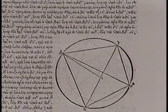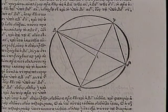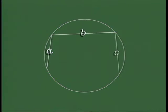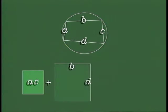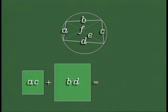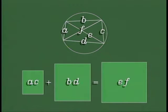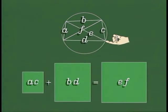Ptolemy himself proved the addition formula in another way, using a remarkable property of quadrilaterals that can be inscribed in a circle. A quadrilateral is a polygon with four sides. Not every quadrilateral can be inscribed in a circle, but for those that can, the product of the lengths of the two opposite sides plus the product of the lengths of the other two opposite sides is equal to the product of the lengths of the two diagonals. This equation is called Ptolemy's theorem and it can be interpreted geometrically in terms of areas of rectangles.